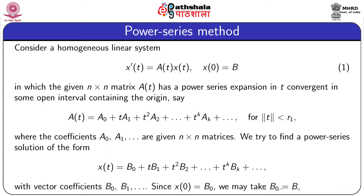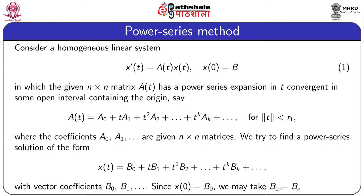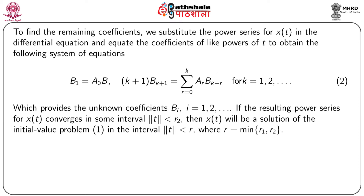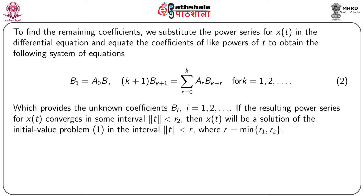Since x(0) = b₀, we may take b₀ = B. To find the remaining coefficients, we substitute the power series for x(t) into the differential equation and equate the coefficients of like powers of t to obtain: b₁ = A₀·b, and b_{k+1} = Σ_{r=0}^{k} A_r · b_{k-r} for k = 1, 2, ..., given by equation 2, which provides the unknown coefficients b_i for i = 1, 2, ....